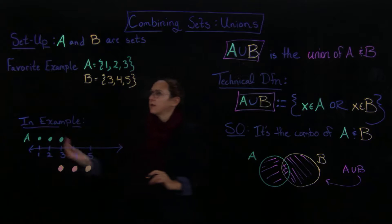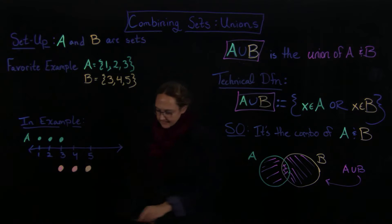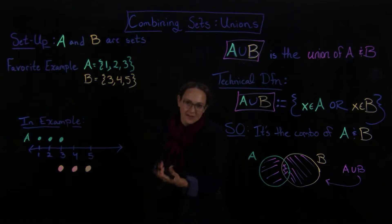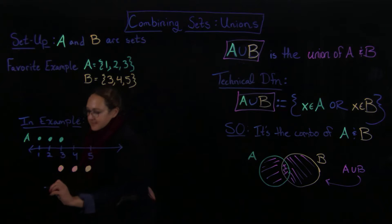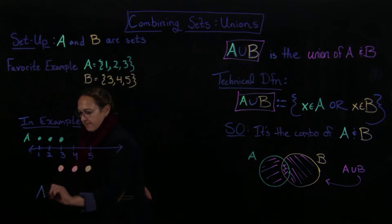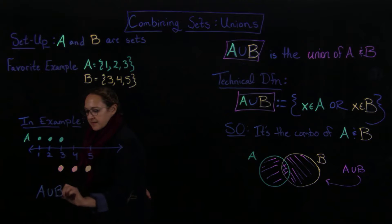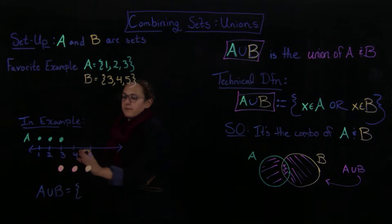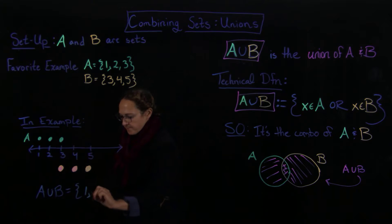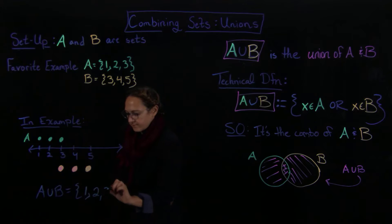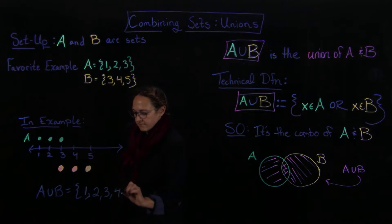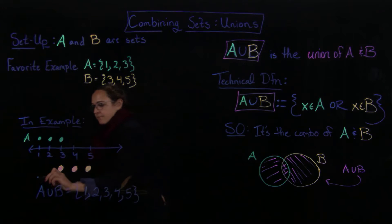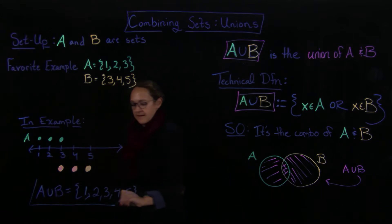Okay, so together we get this entire set, so everything that's got a circle next to it, it's okay if it has 2, it's going to be included in the set. So in this circumstance we have A union B is going to equal, so I include 1, and 2, and 3, and 4, and 5. And that's my final answer.